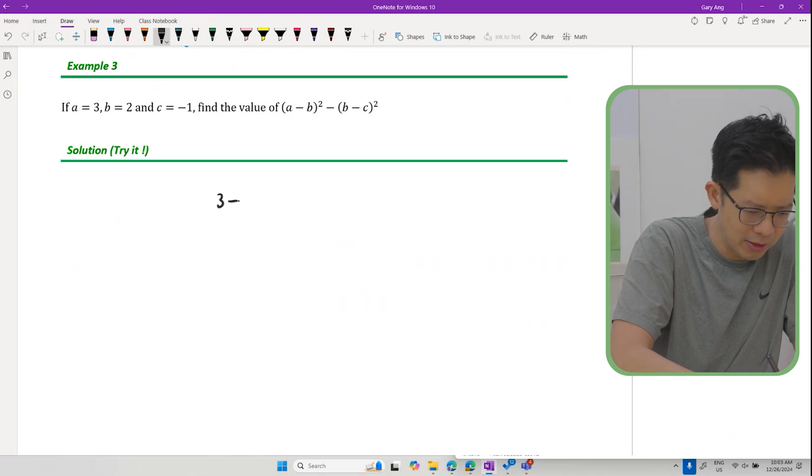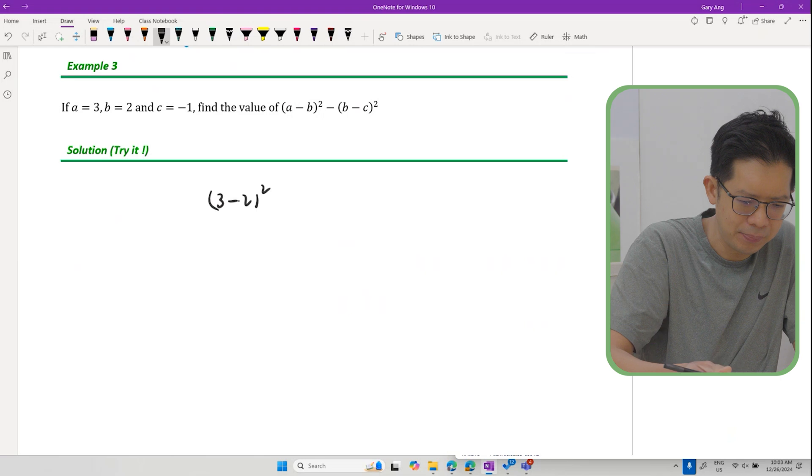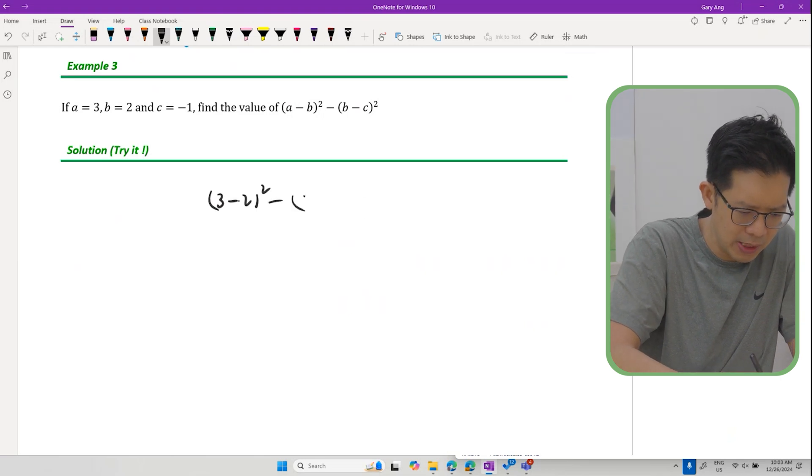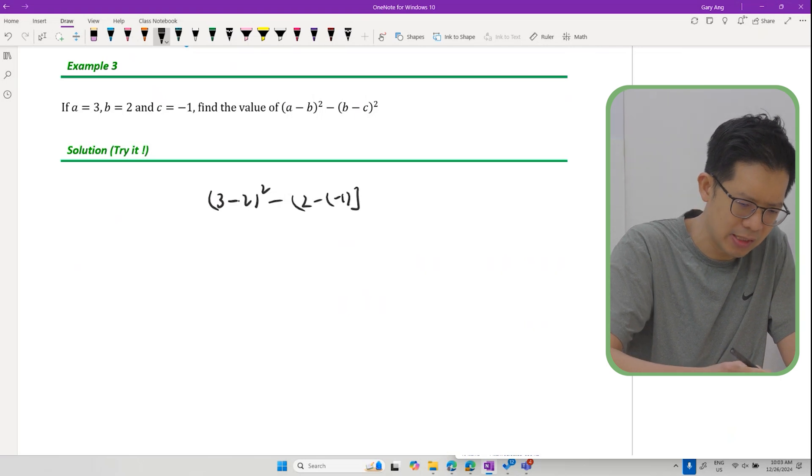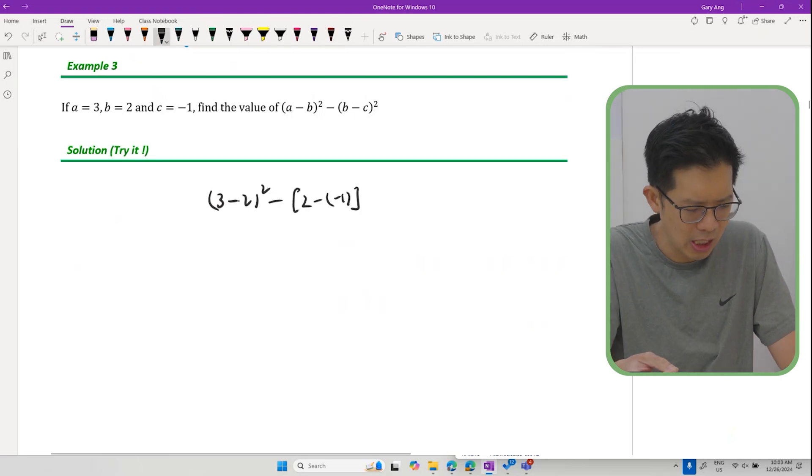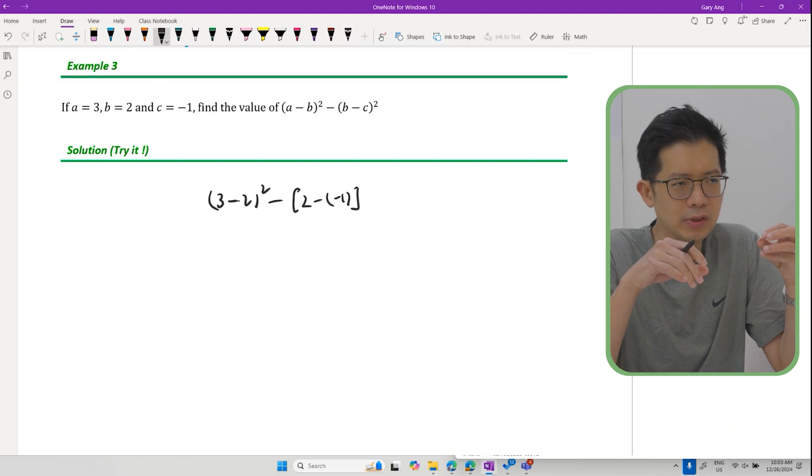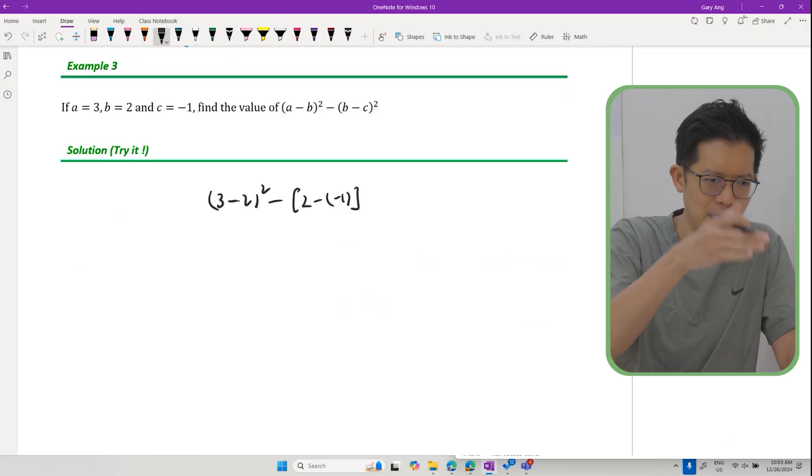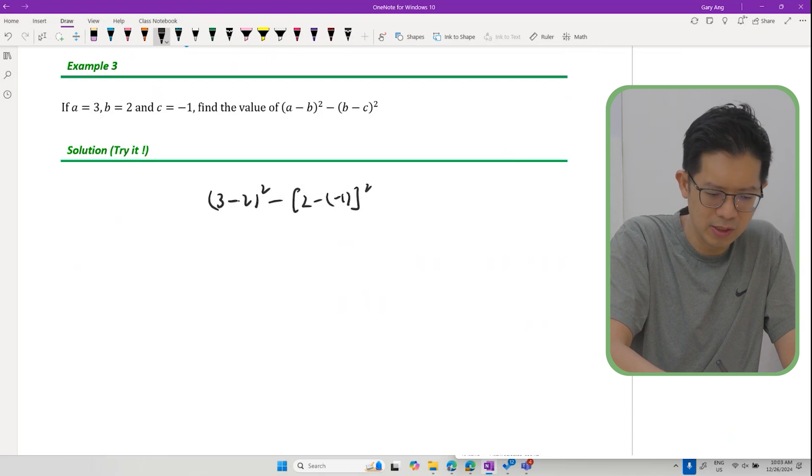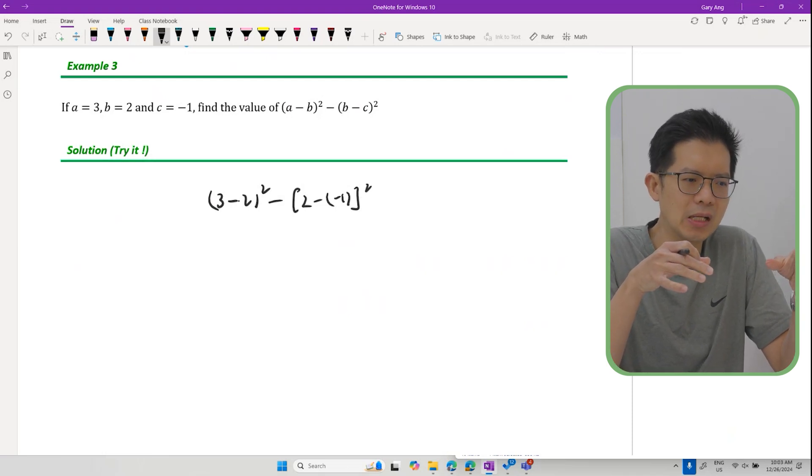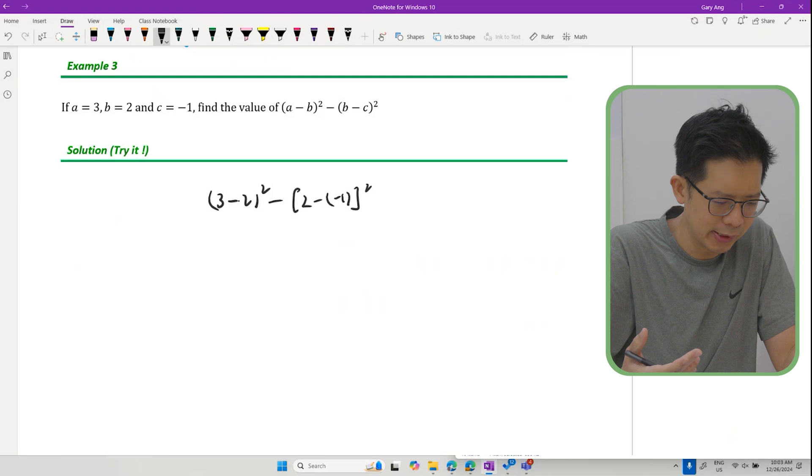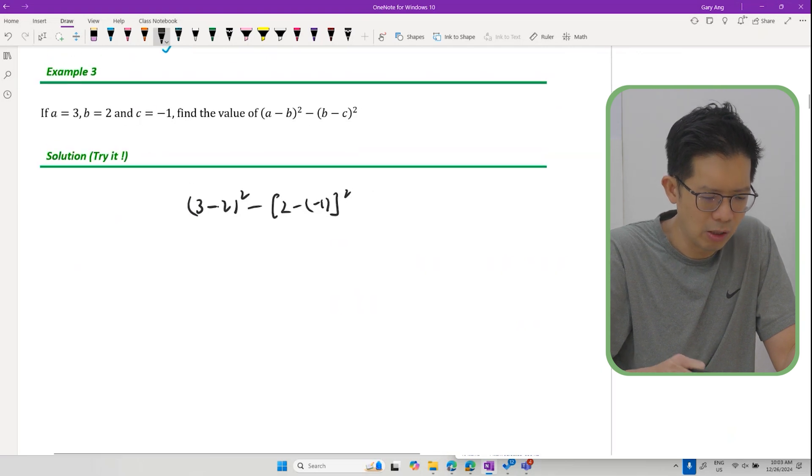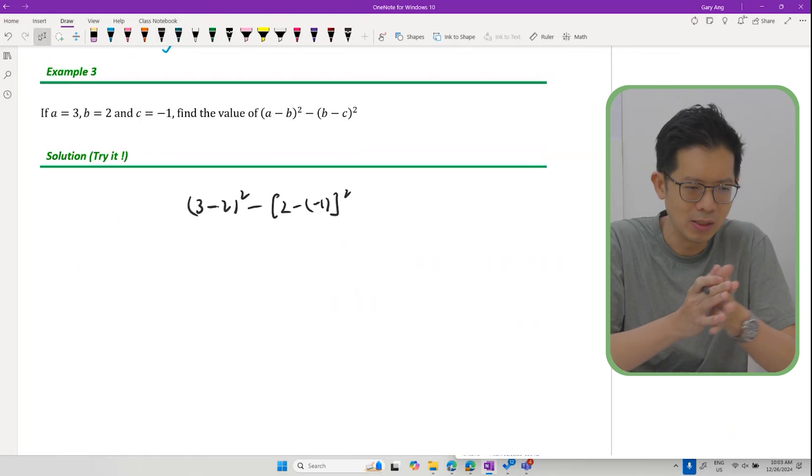3 minus 2 bracket up squared and then minus B minus negative 1. You got to be careful with this double minus because in the earlier chapters you should have learned the basics of negative numbers. When you have minus of negative it becomes positive. The main reason is the multiplier effect. But this chapter is not really talking about that anymore. This is talking about how we deal with algebra and make sense of what is going on.